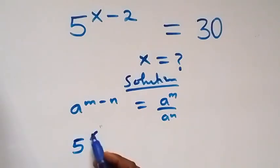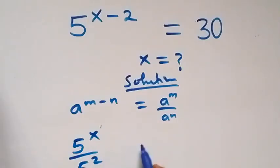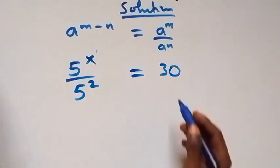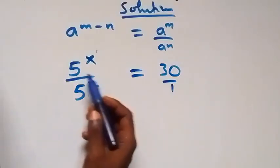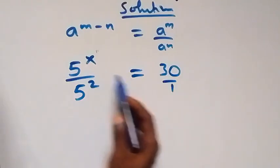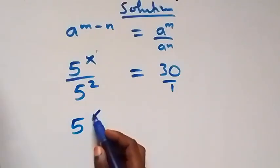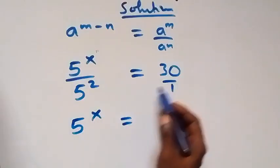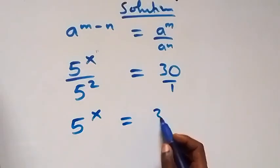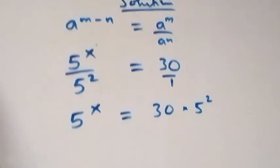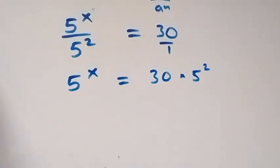This can be written as 5 raised to power x over 5 raised to power 2, which equals 30 on this side. This is also 30 over 1. Then let's cross multiply here: 5 raised to power x times 1 equals 30 times 5 squared.